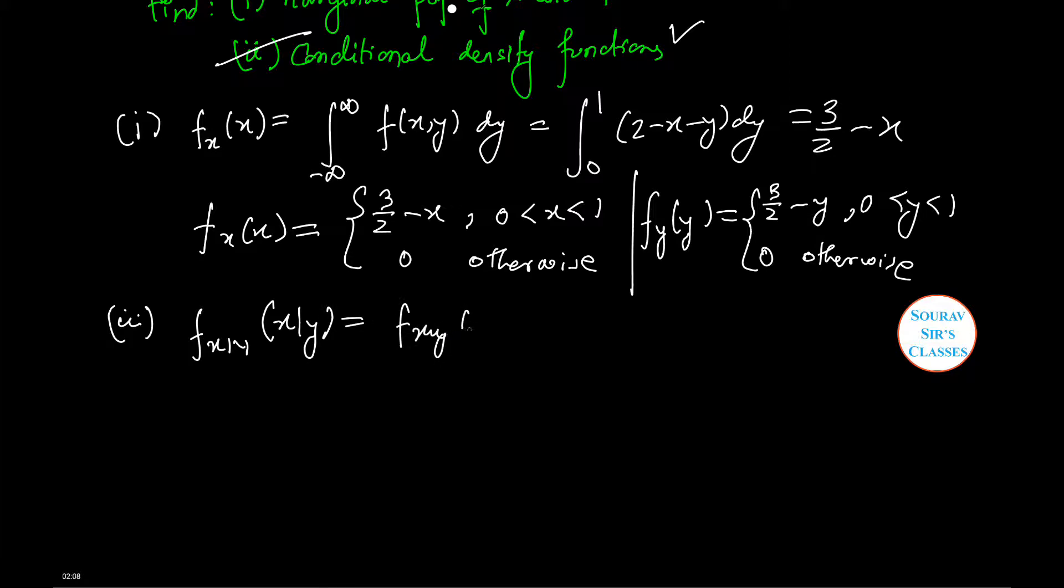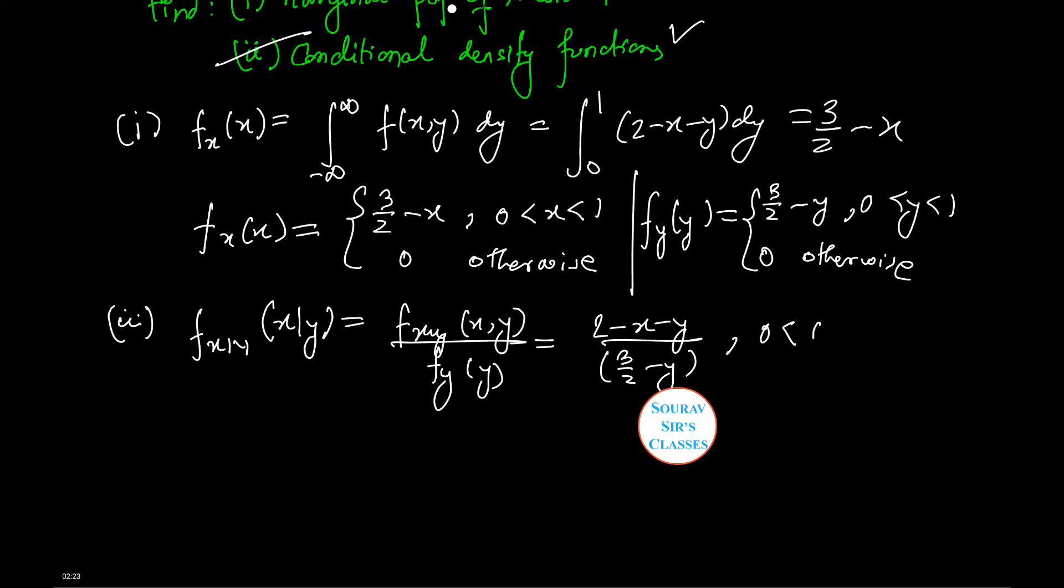Which is equals to 2 minus x minus y by 3 by 2 minus y, that is 0 less than x comma y less than 1.